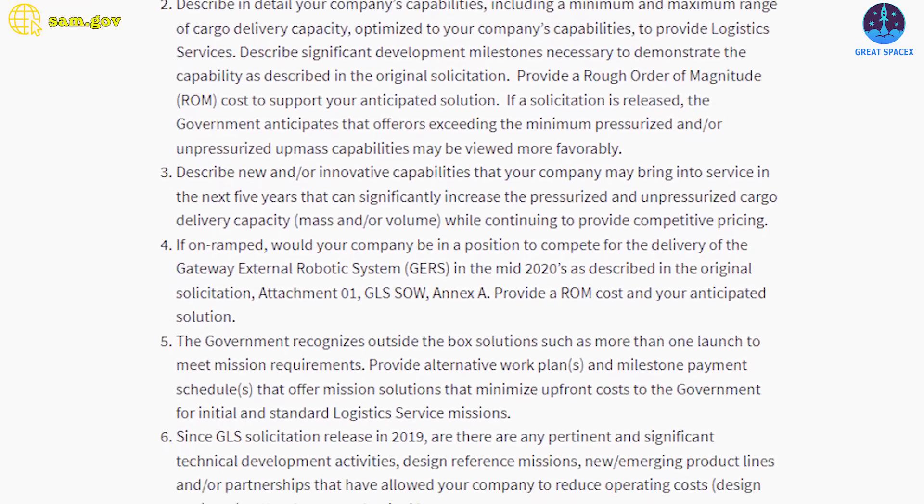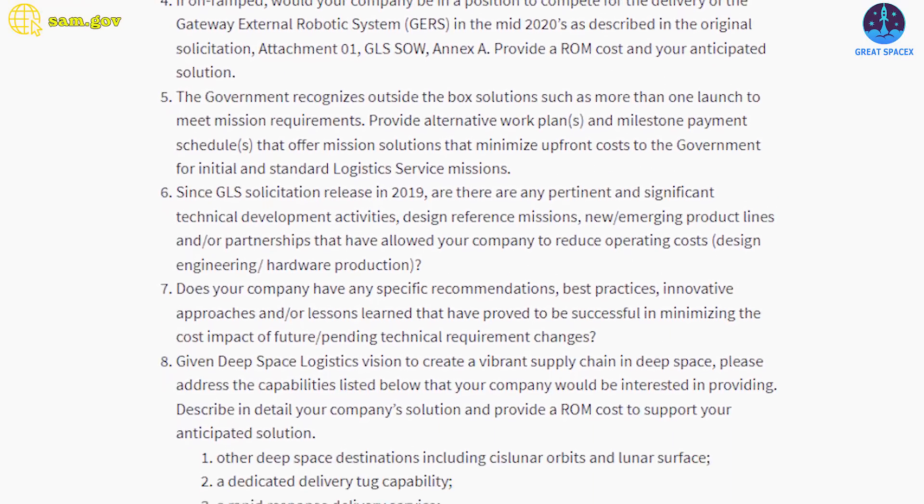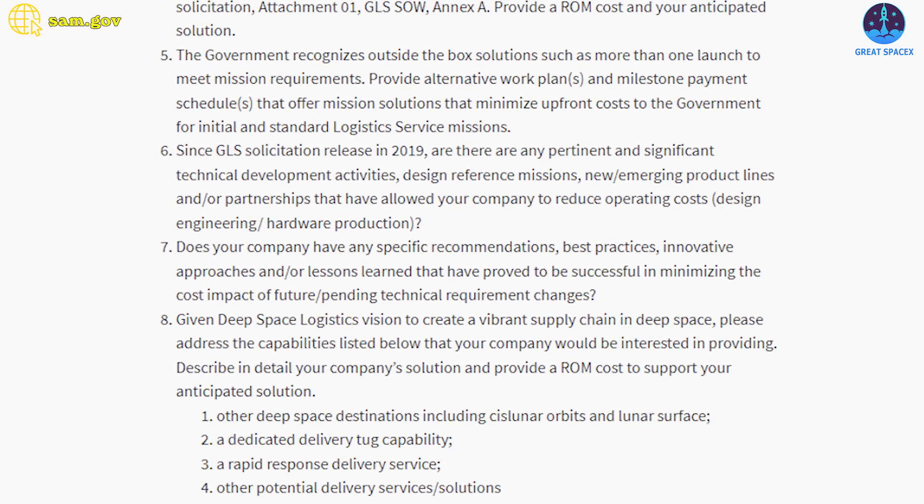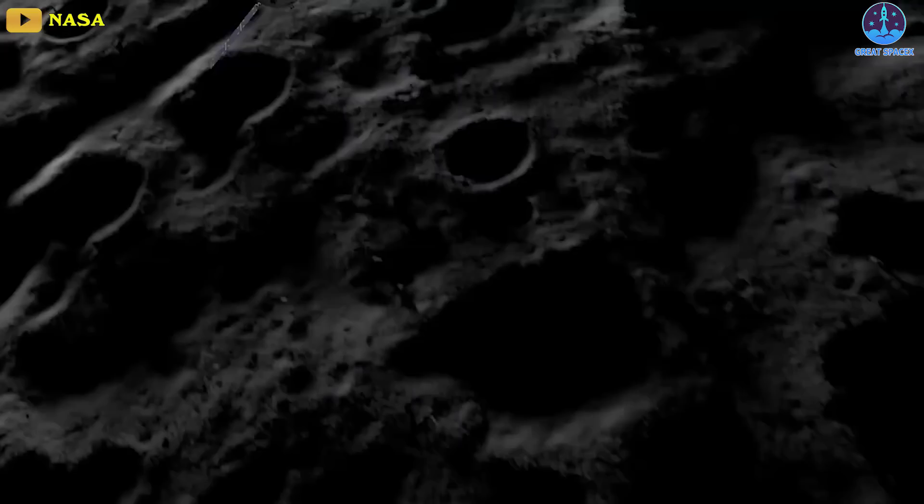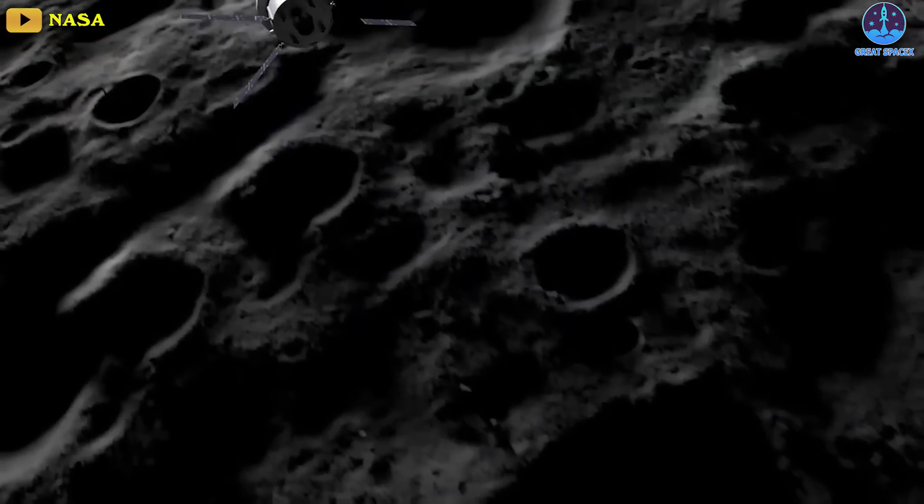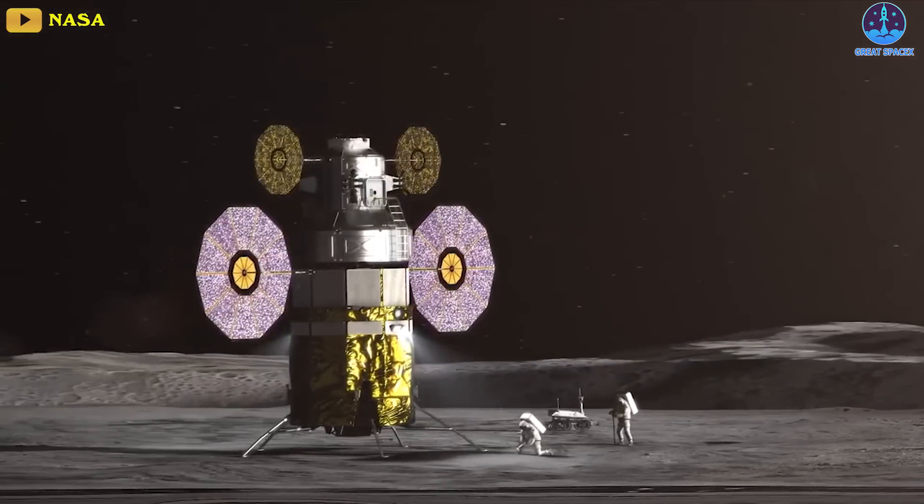In question number eight, NASA asks if, to help create a vibrant supply chain in deep space, respondents would be able to deliver additional cargo to cislunar orbits and the lunar surface or offer a dedicated delivery tug capability or rapid response delivery service.